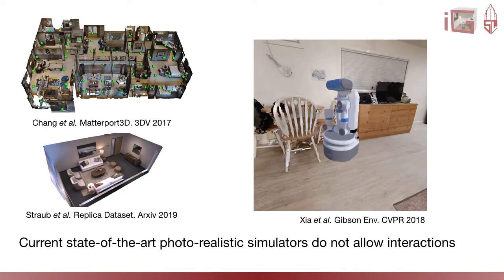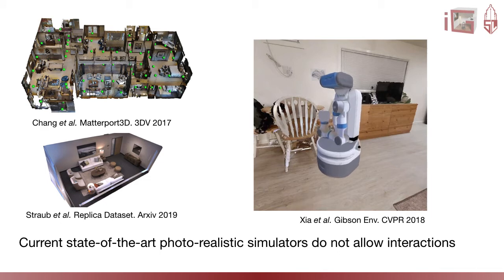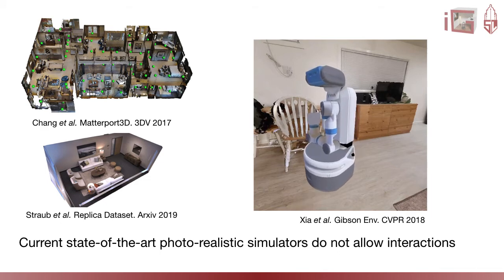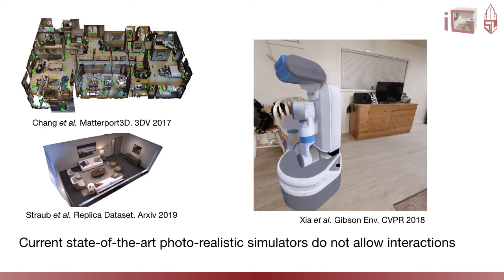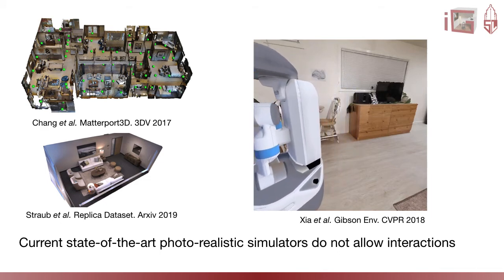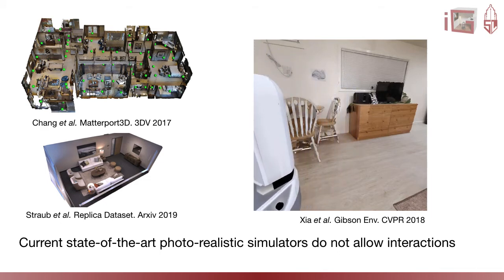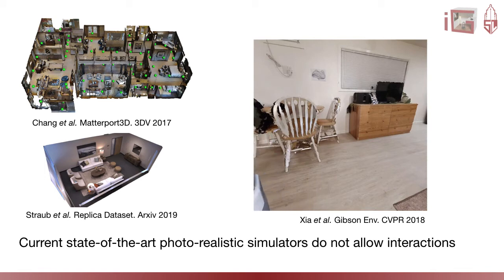In this video example, we can see a robot in the first version of Gibson Environment navigating and colliding with a chair. We would expect the chair to move, but because the entire scene is a rigid mesh, the robot has to slide around the chair to continue its motion in a very unrealistic manner.